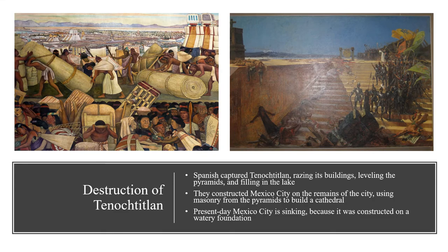Tenochtitlan finally fell on August 13, 1521. The Spanish destroyed the town, leveling the pyramids and filling the lake in with earth, creating the foundations for Mexico City, the present-day Mexican capital. They used stone from the demolished pyramids to build a cathedral and a plaza at the center of the new city, both of which can be seen today.